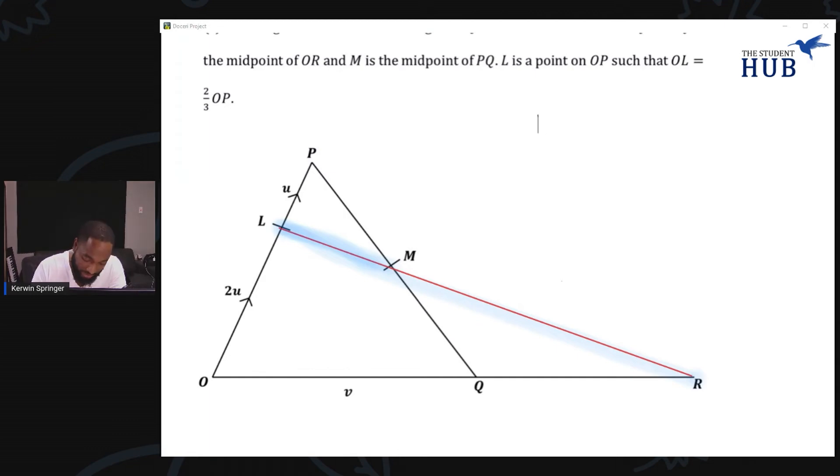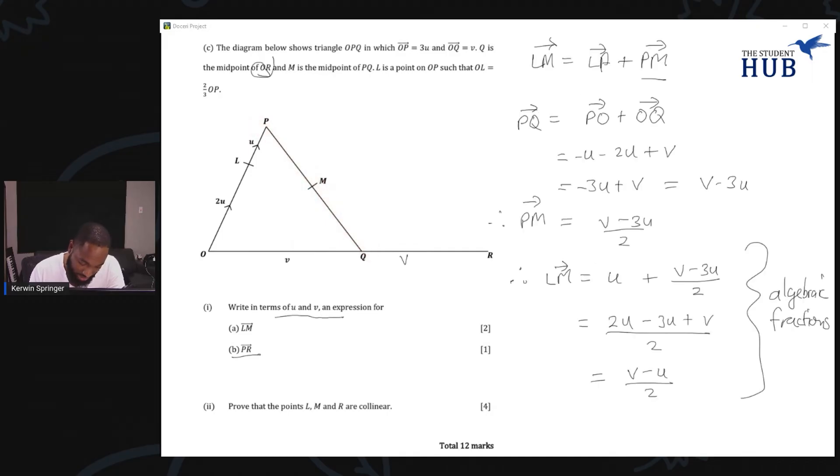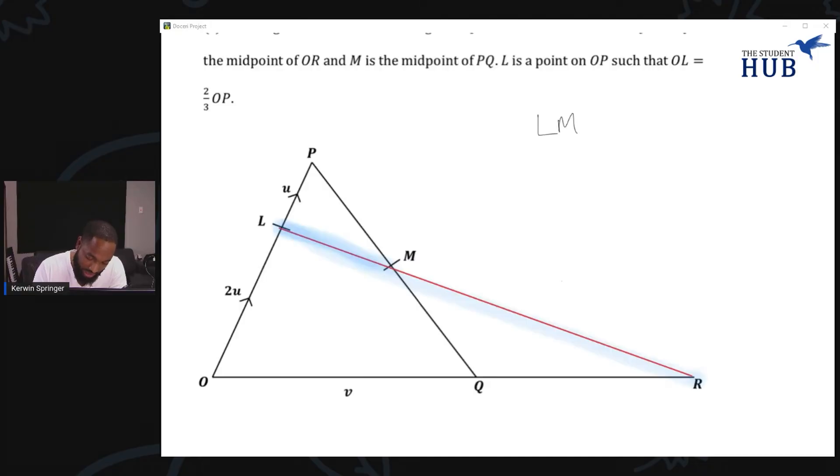Let's see, LM did we find that already? Yes, thank goodness we found LM already. LM is (v minus u)/2.